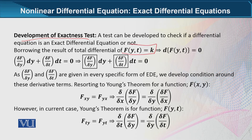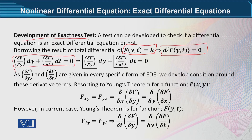We borrow the same function and calculate the differential on both sides, as we did before. From that result, two terms are especially clearly visible: the derivative of f with respect to y, and the derivative of f with respect to t. These two terms are given in every specific form of an exact differential equation. We develop a condition around these derivative terms, and on this basis we are going to develop the exactness test condition.